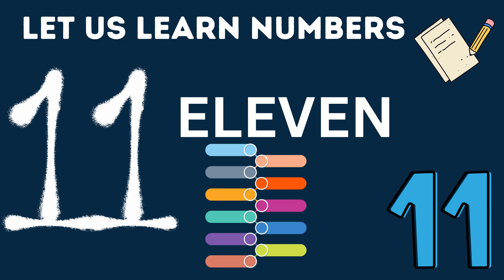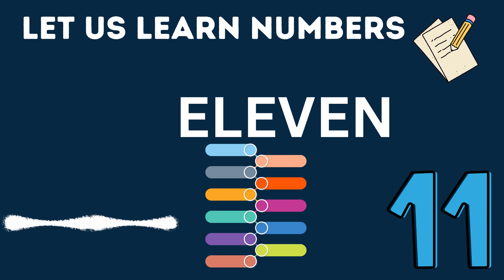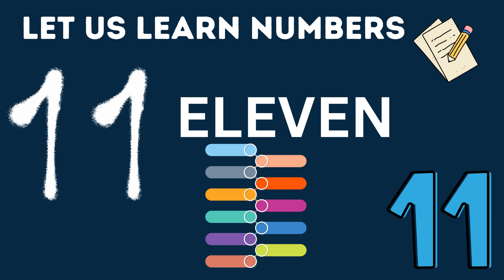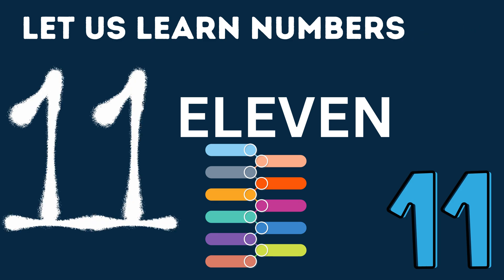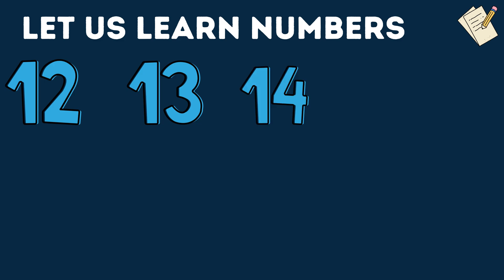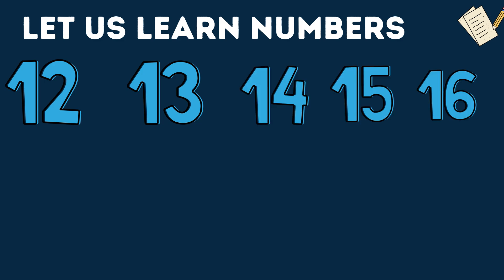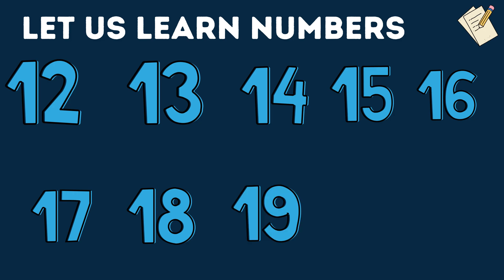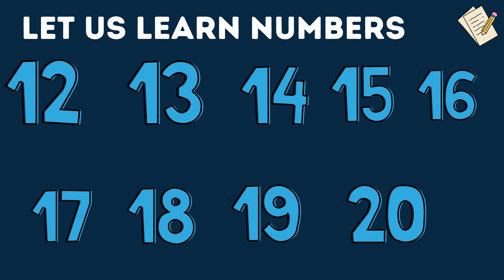All right. Let us see what numbers come next. Are you with me kids? OK. Next numbers are: 12, 13, 14, 15, 16, 17, 18, 19, 20. Are you following? Kids, now you know 20 numbers. Good job kids.